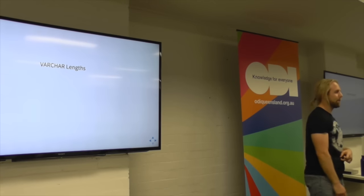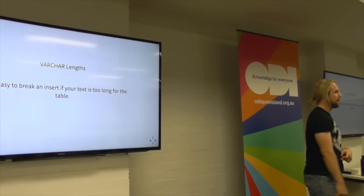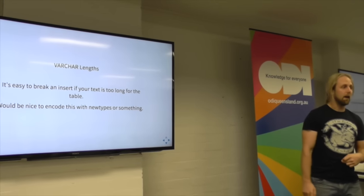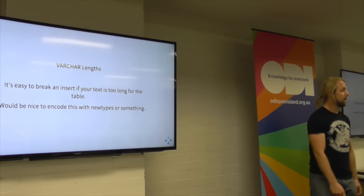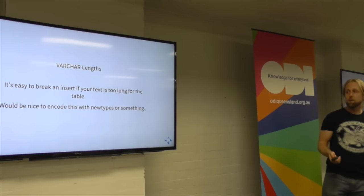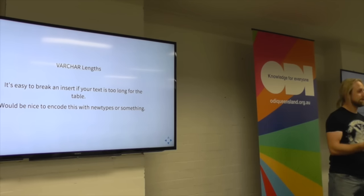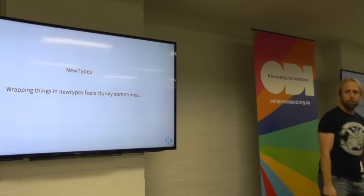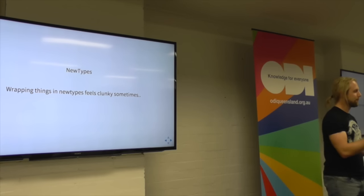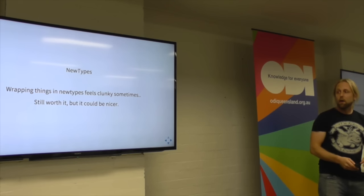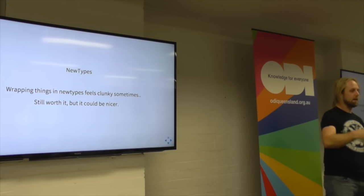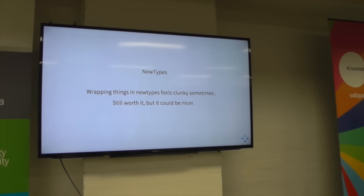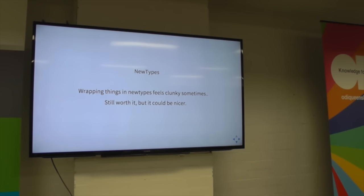VARCHAR lengths: you can easily screw up your inserts by inserting text that's too big for the database. It'd be really nice to have that encoded in the types somehow. The newtypes, as we saw, are a bit clunky — it's a bit weird and really forces you to understand the profunctor stuff because there's this extra layer the tutorials don't talk about. But I think for the benefits — being able to return IDs out of projections and know what they are, making sure you're not joining a loan ID to a book ID — the newtypes are definitely worth it.